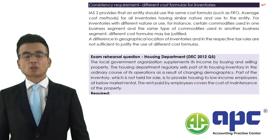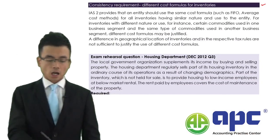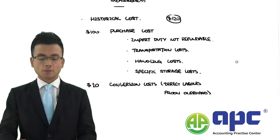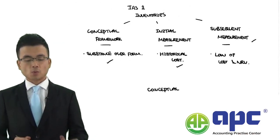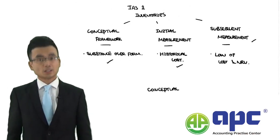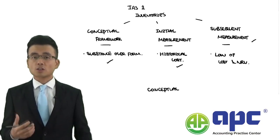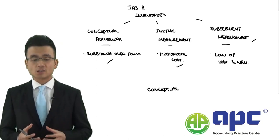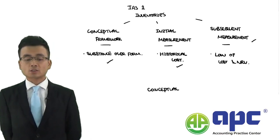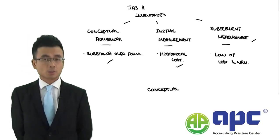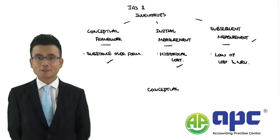In this particular section we have covered three areas of IAS-2: conceptual framework requirements, initial measurement, and subsequent measurement. In our next section, we will be looking at a few case studies relating to IAS-2 inventories in much more detail. See you soon.